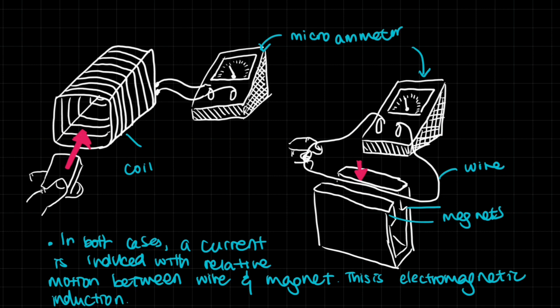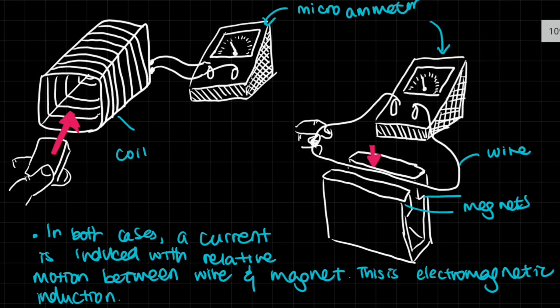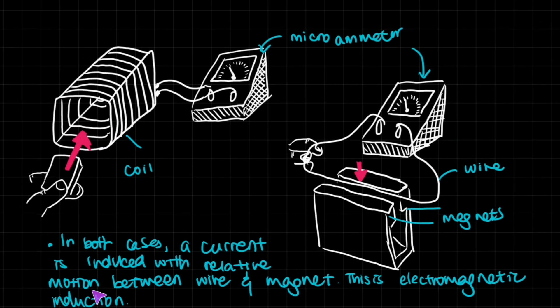Another example over here: these are magnets, and between them you would see a magnetic field — considering this as the North Pole and this as the South Pole. You decide to move this wire, which is also not connected to any power supply, so it wouldn't have current in it. You move it through the magnetic field and out, back and forth. You will see that, in the same way as before, a current will be shown on the microammeter. In both cases, a current is induced with relative motion between the wire and the magnet — this is electromagnetic induction.